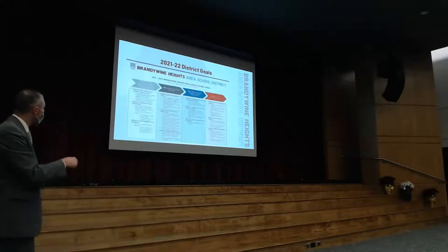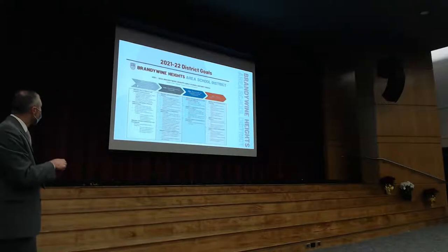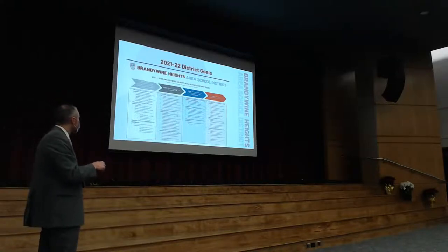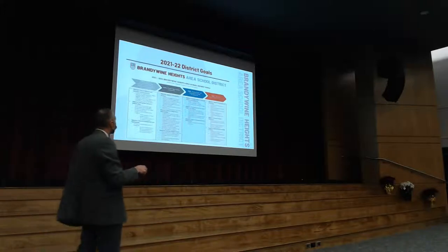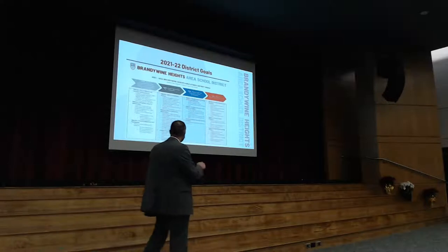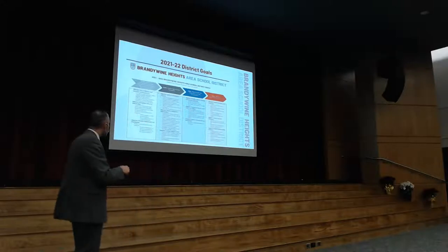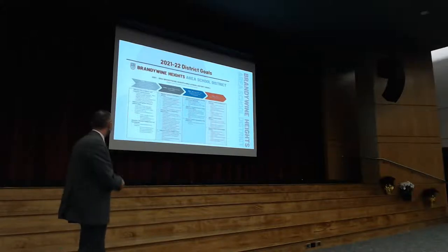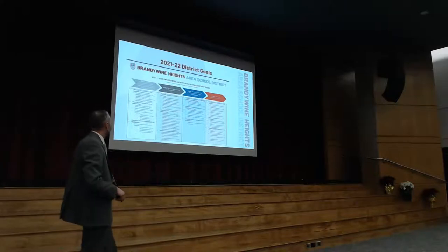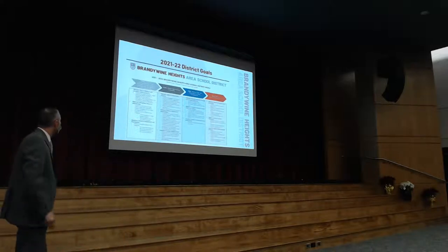Out of that five-year Gantt chart we developed our yearly goals. This document has four separate unique goals: the first is all about communication, the second is about instruction, the third is a safe and secure learning environment, and the fourth is optimizing organizational efficiency. These goal buckets have not changed over the course of the strategic planning process — what changes is the detail behind them.